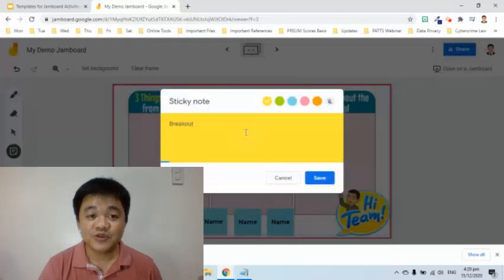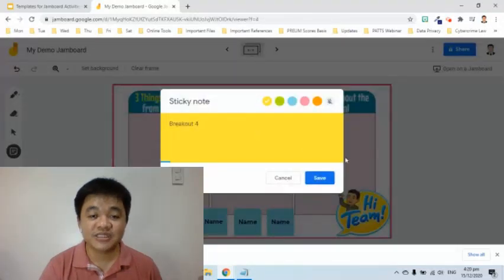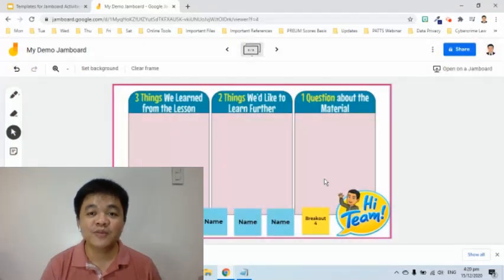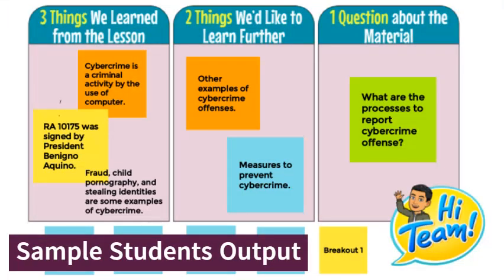In this activity, students will use either a text box or sticky note to come up with three things that they have learned from our lesson, two things that they would like to learn further, and one question regarding the material.